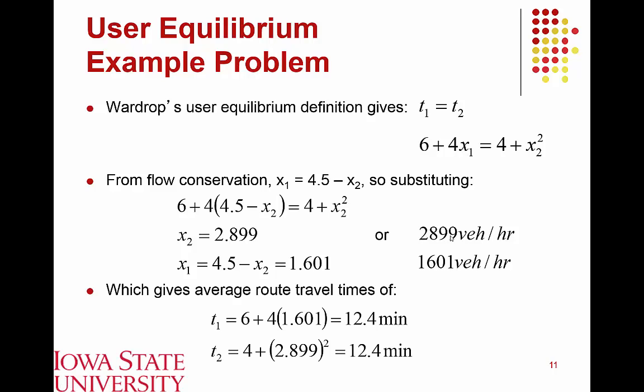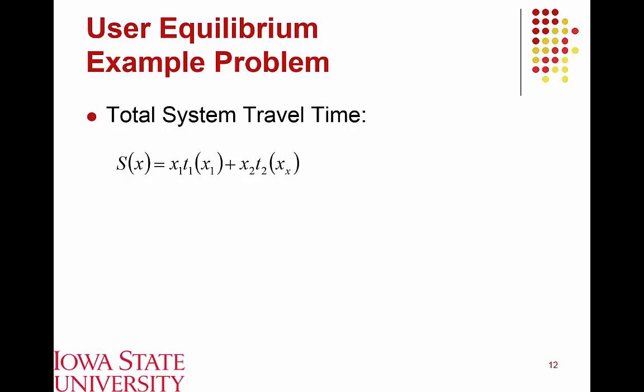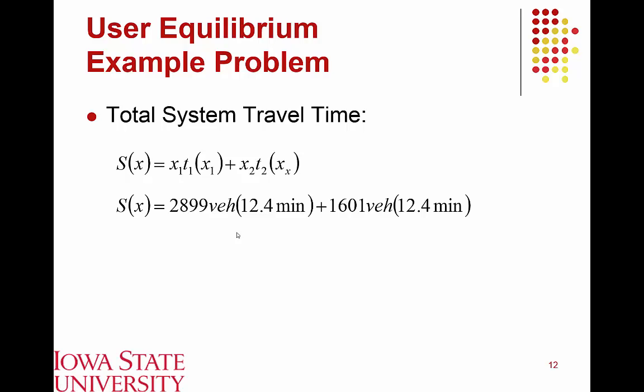From those volumes, we calculate travel times by plugging in 1.601 and 2.899 (in thousands of vehicles per hour). As expected under user equilibrium, travel times on both routes are equal at 12.4 minutes. Total system travel time is calculated as (vehicles on route 1 × route 1 travel time) + (vehicles on route 2 × route 2 travel time). With 1,601 vehicles on route 1 and 2,899 on route 2, the total is 55,800 vehicle-minutes, or 930 vehicle-hours under user equilibrium.